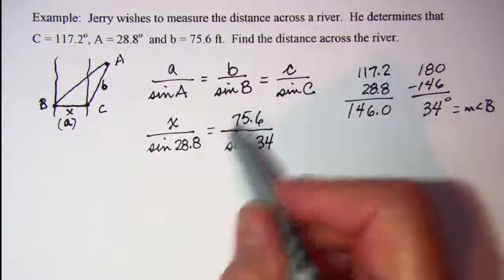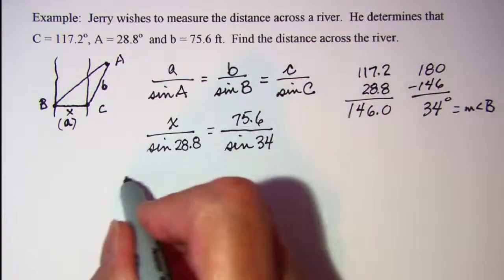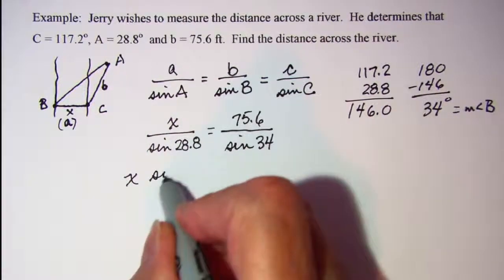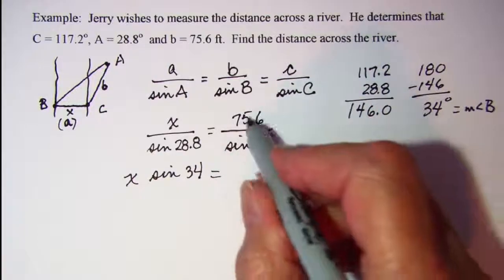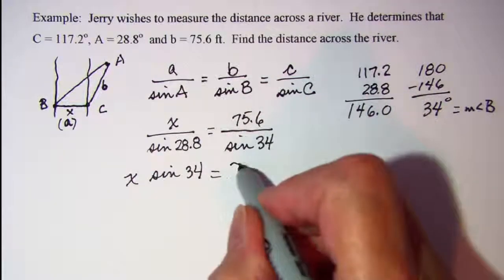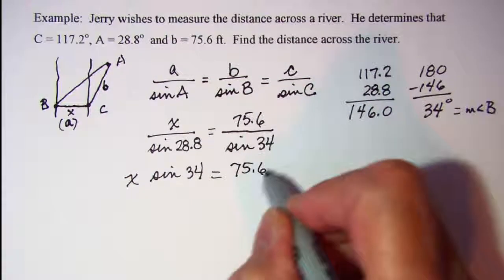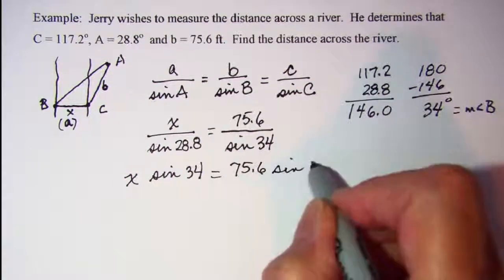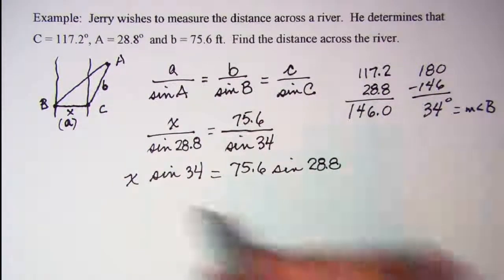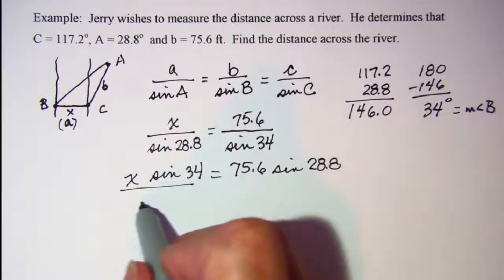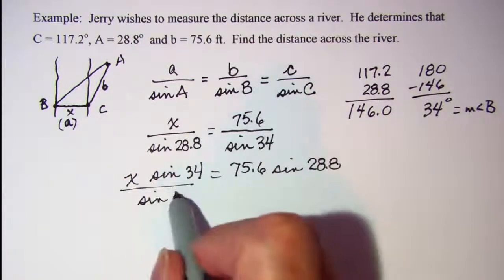Now we're going to use cross products here. X times the sine of 34 is equal to this product, which is 75.6 times the sine of 28.8. Get a calculator ready by dividing both sides by the sine of 34.